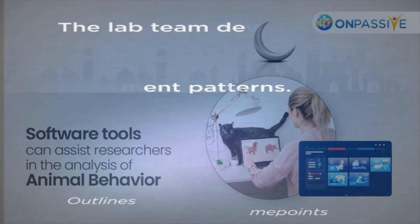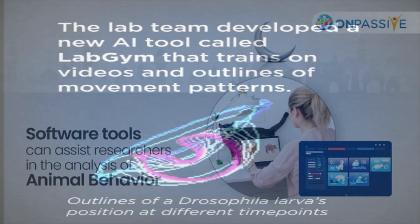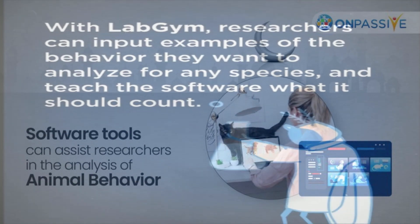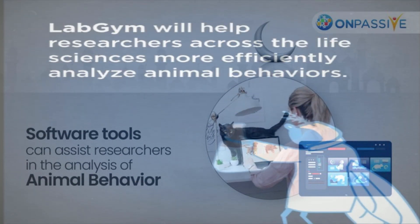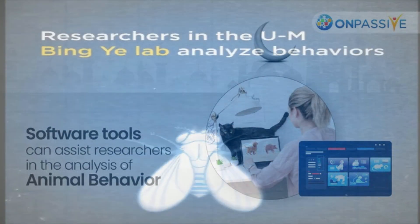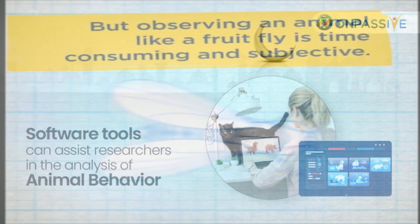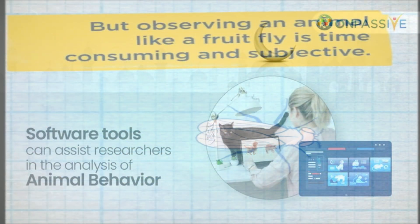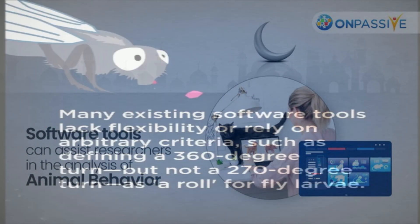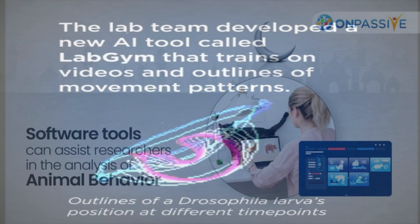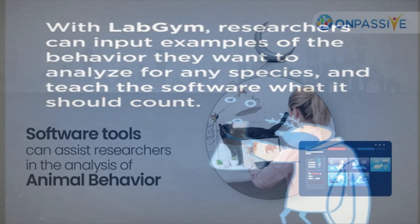While there are a few software systems that can automatically quantify animal actions, they are difficult to use. Many of these behavior analysis programs are based on pre-set definitions of a behavior, said Yi, a cell and developmental biology professor at the medical school. Some programs will count a roll only if a Drosophila larva rolls 360 degrees, for example. But why isn't 270 degrees also considered a roll? Many programs lack the flexibility to count unless the user knows how to reprogram the software.